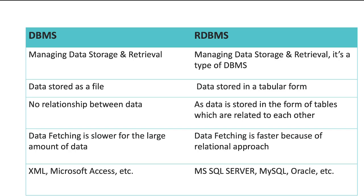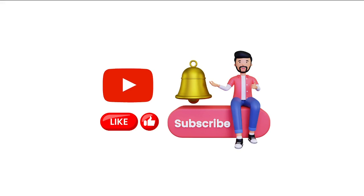Data fetching is slow for large amounts of data in DBMS, whereas data fetching is faster because of the relational approach in RDBMS. Examples of DBMS are XML and Microsoft Access; examples of RDBMS are SQL Server, MySQL, Oracle, PostgreSQL, and so on. I hope this video gives you a clear understanding of DBMS and RDBMS. Don't forget to like and subscribe. In our coming video we are going to talk about relationships in RDBMS — stay tuned, thank you.